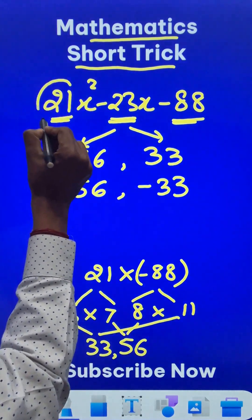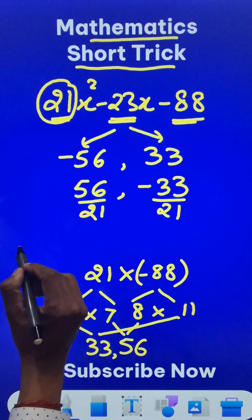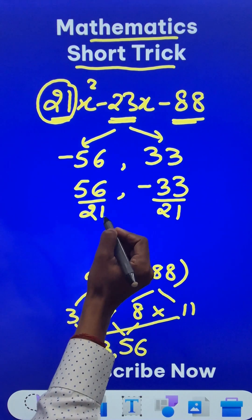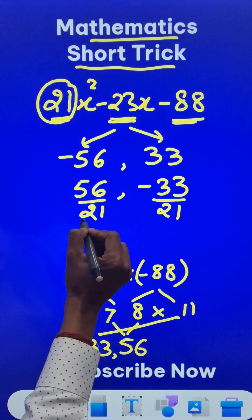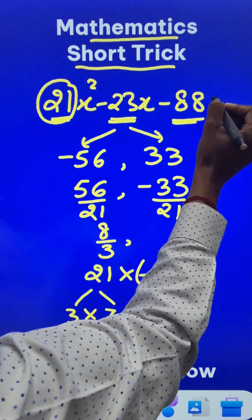And the coefficient of x squared is 21. So let's divide this by 21 and this by 21. And once you reduce it to the lowest form, this becomes 8 upon 3 if you cancel the common factor 7. So 8 upon 3 is one of the roots of this quadratic equation.